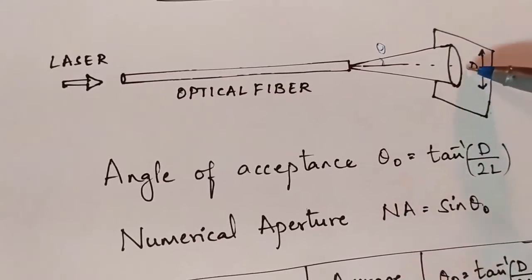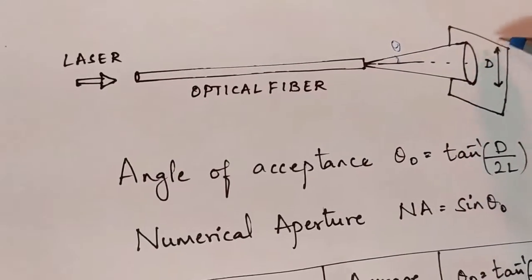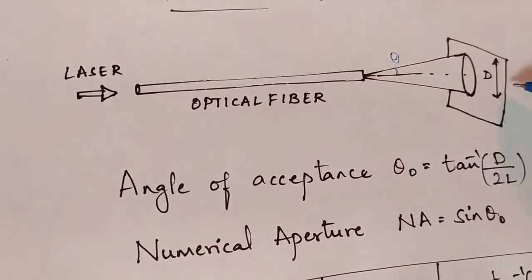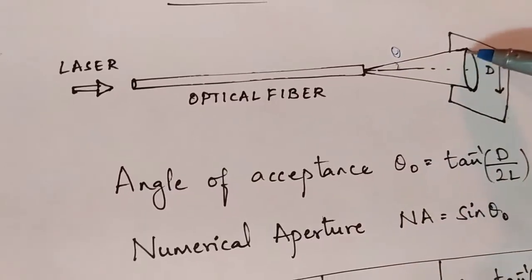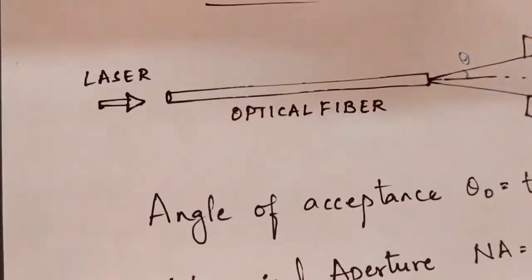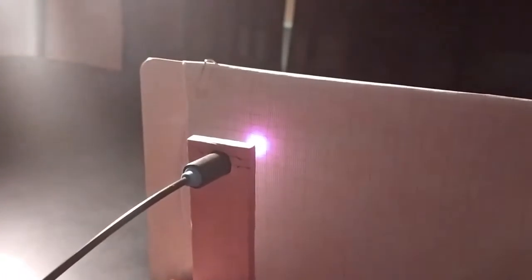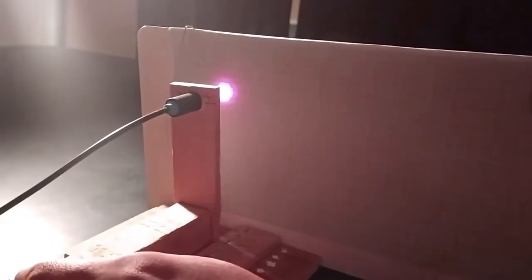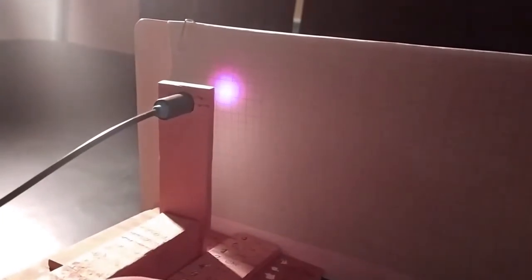Now let us understand how to mark these circles on the screen. What we are doing is varying the distance between the optical fiber and the screen over large distances, marking the light falling on the screen, and then calculating theta naught. We can notice that as I increase the distance between the optical fiber and the screen, the aperture of the light falling on the screen also increases.